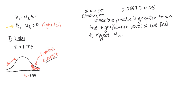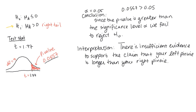Failing to reject means we are not rejecting the null hypothesis, so we cannot be supporting the alternative hypothesis — which was our claim. Therefore, we do not have enough evidence to support the claim. There is insufficient evidence to support the claim that a person's left pinky is longer than their right pinky.